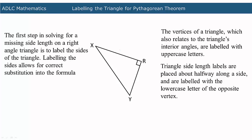Triangle side length labels are placed about halfway along a side and are labeled with a lowercase letter of the opposite vertex.